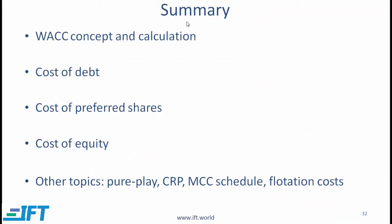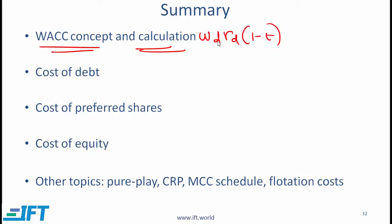That brings us to the end of this reading. You need to understand the concept behind WACC — weighted average cost of capital represents the cost of raising money from different sources, so we take the weighted average of costs associated with each source. You must know the calculation: cost of debt × (1−t) × weight of debt, where weightages are based on market values, plus cost of equity × weight of equity, plus cost of preferred shares × weight of preferred shares if applicable.